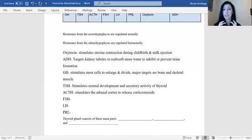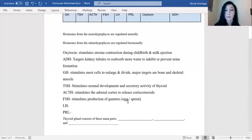This is what it's really focused on. Your follicle stimulating hormone says it stimulates production of gametes. Gametes are in females eggs and in males sperm.